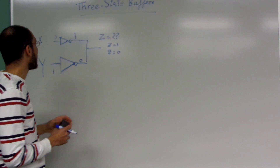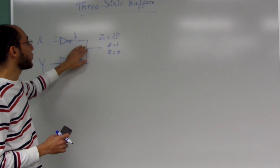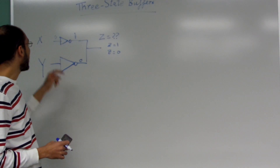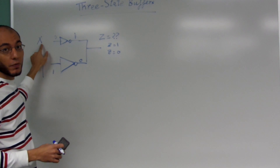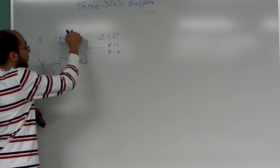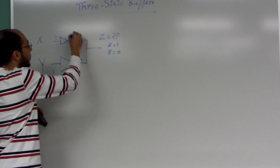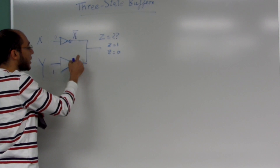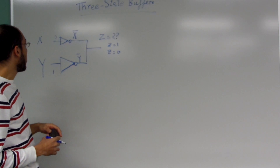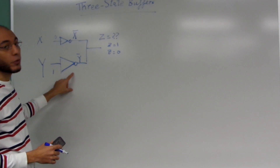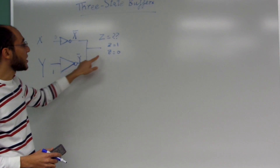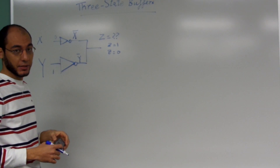Let's assume we want to do this: we only have one LED, and we want to see sometimes the complement of X — X bar — and some other times we want to see Y bar. So the question is, what do we do in order to see X bar and Y bar using a single LED?